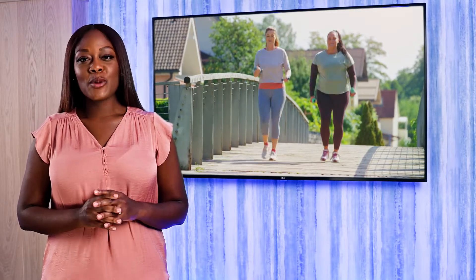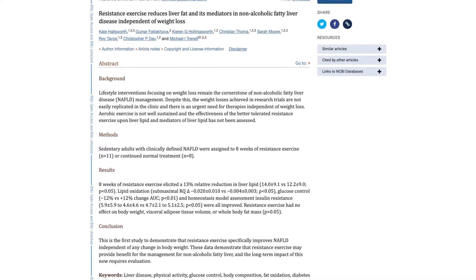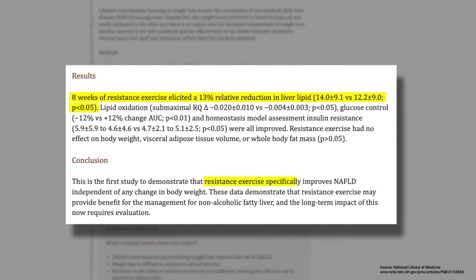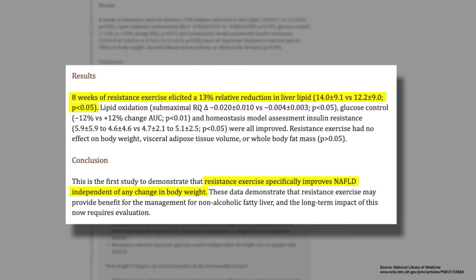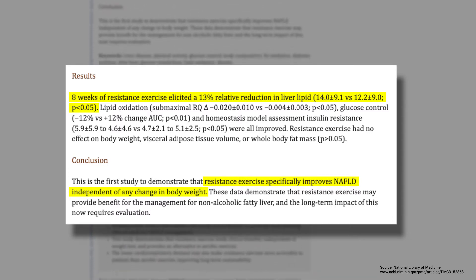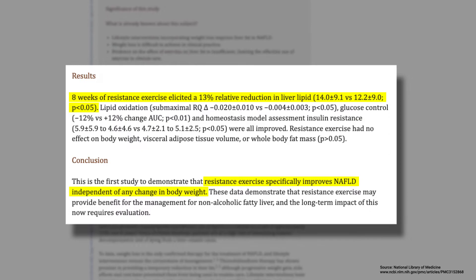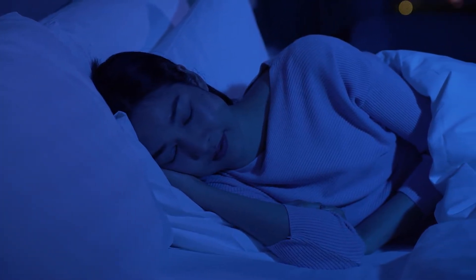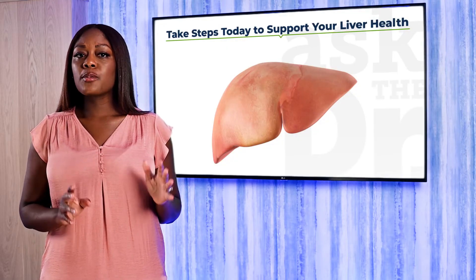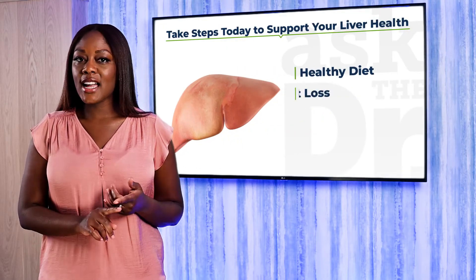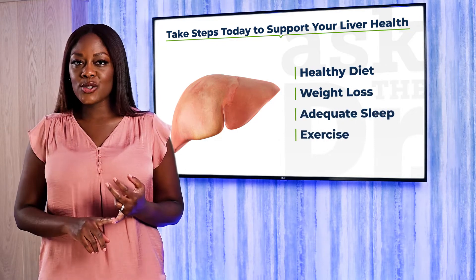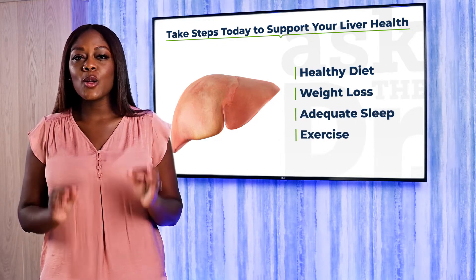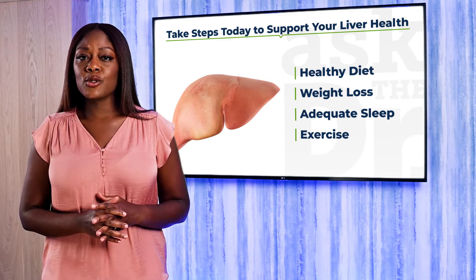Exercise is also important. In fact, exercise may improve NAFLD even in the absence of weight loss. One study found that eight weeks of resistance training led to a 13% reduction in liver fat among previously sedentary adults with NAFLD, even if they didn't lose weight. Getting enough sleep may also help reduce the risk of NAFLD. The available evidence suggests an approach emphasizing a healthy diet, weight loss, adequate sleep, and exercise is likely an effective strategy for halting or reversing NAFLD in most people.